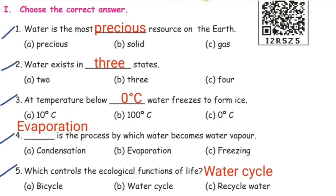Fifth one: which controls the ecological function of life? Options: bicycle, water cycle, recycle. Answer: water cycle. Ecological means environment. The water cycle controls the ecological functions of living things in the environment.